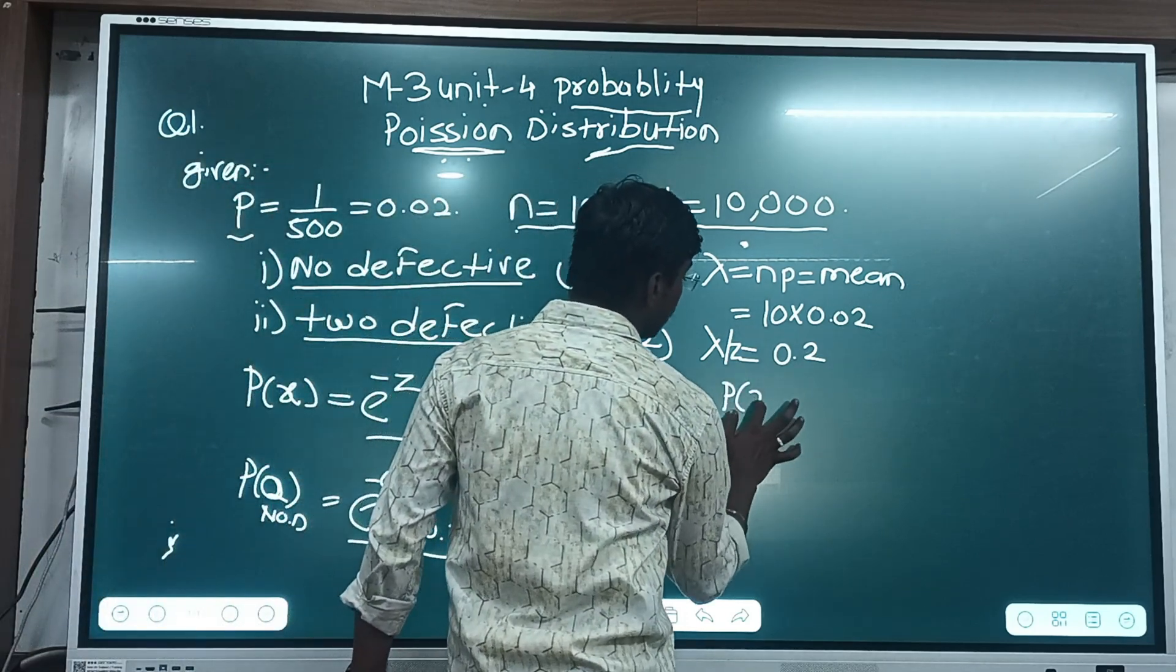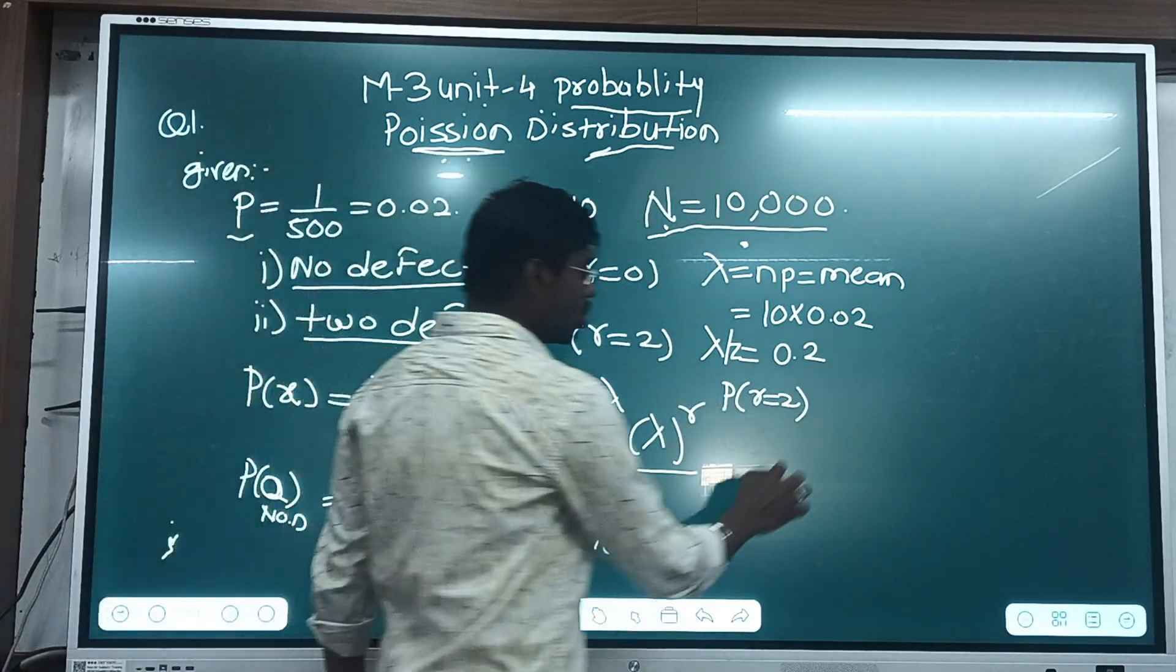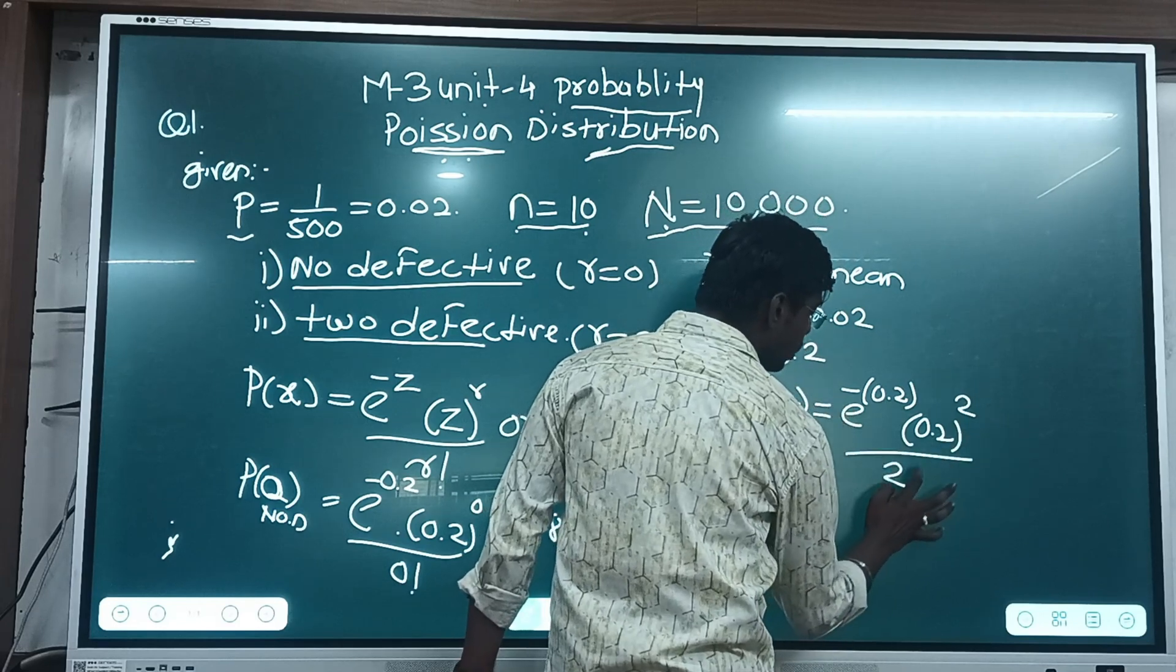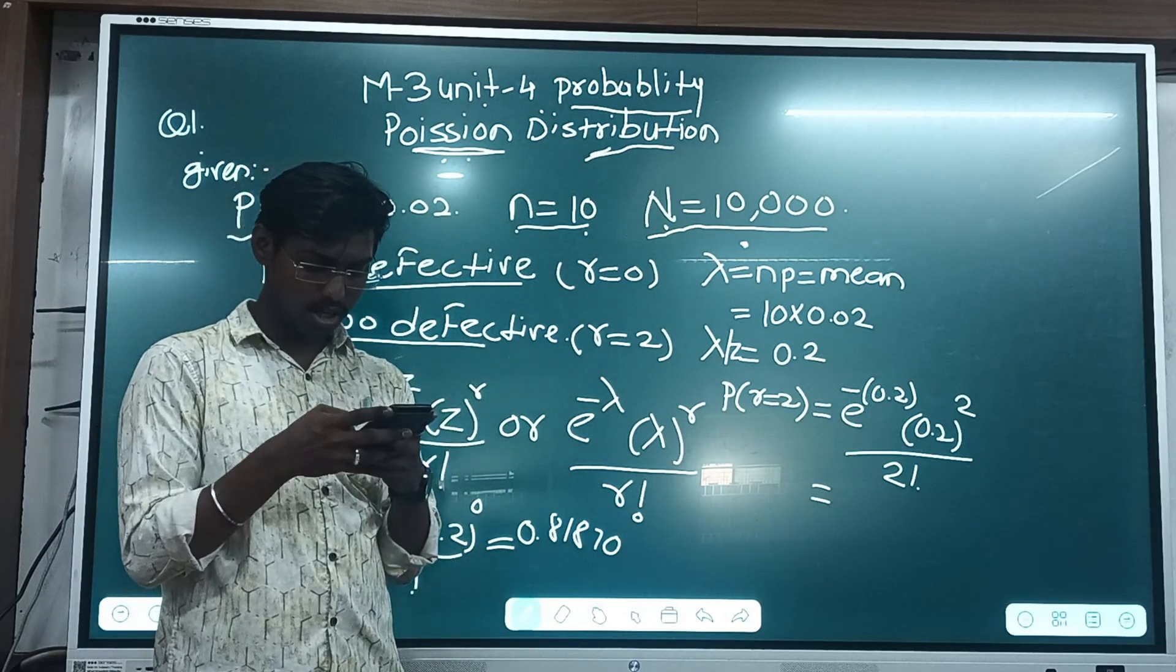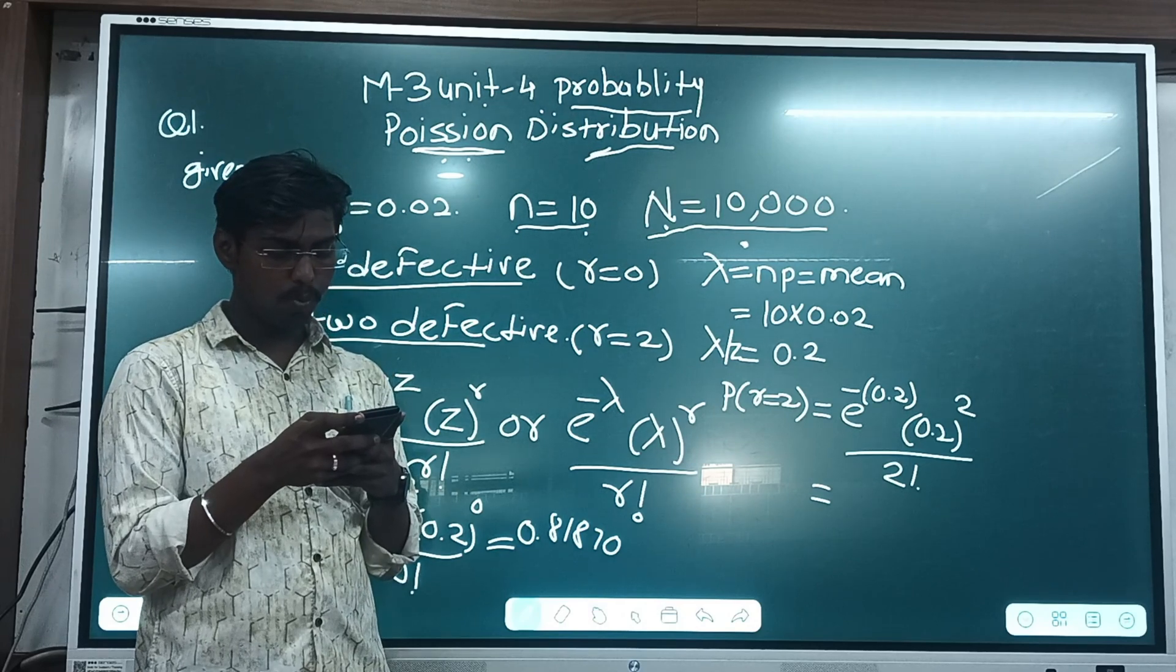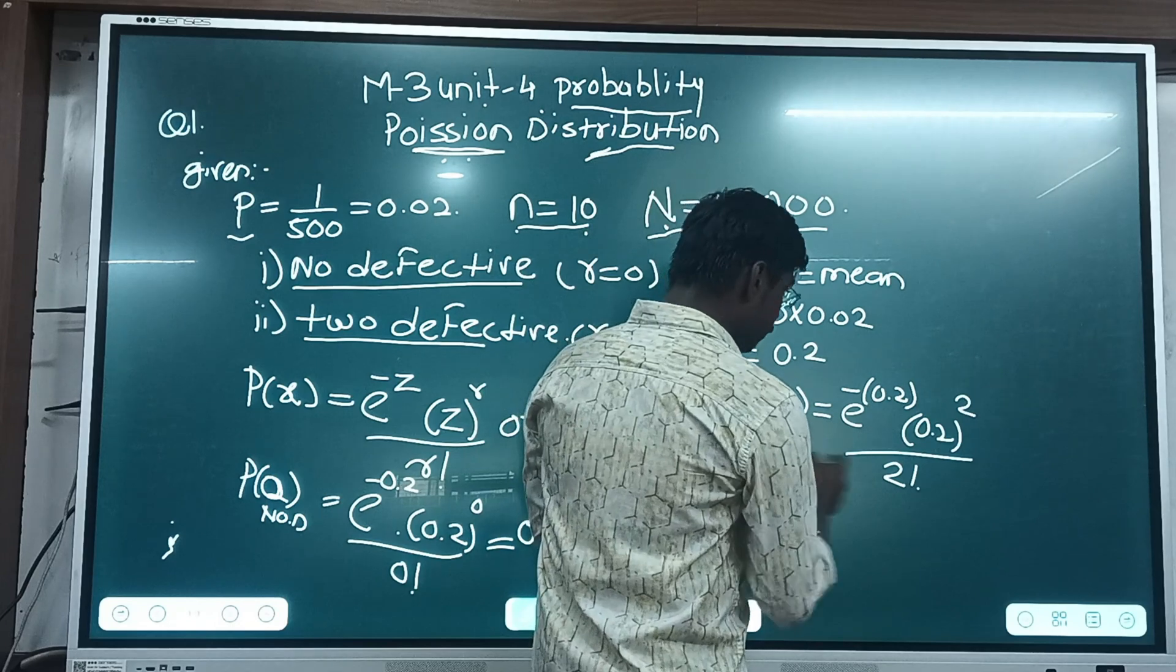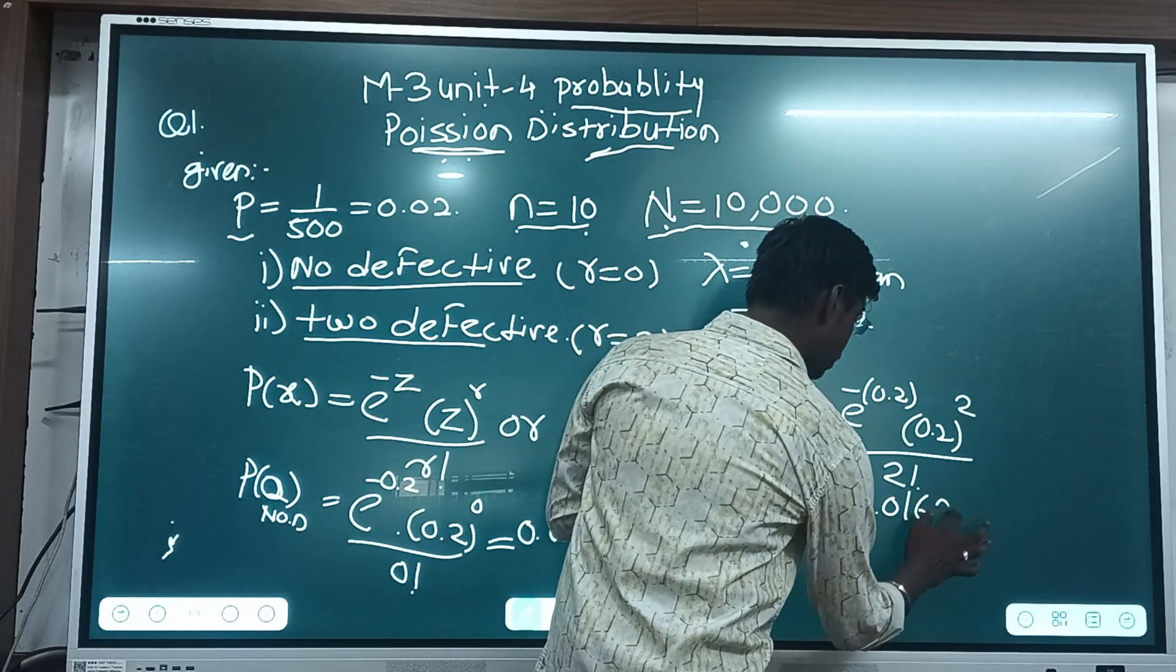After that, the second thing is asked for r is equal to 2, the 2 defective out of that. So after that, e raised to, again z value is the same for both conditions, but r value is different. That is r is equal to 2, and again it is 2 factorial. By using calculator, find out answer. That is e raised to minus 0.2 into 0.2 raised to 2 divided by 2 factorial. The answer is 0.01637.